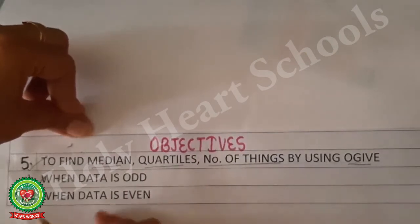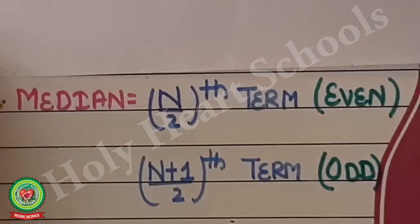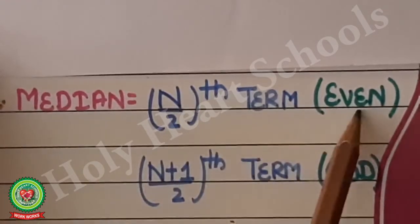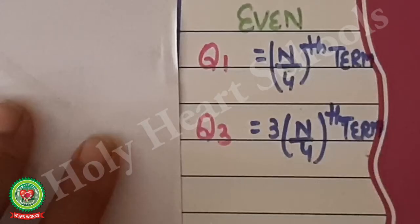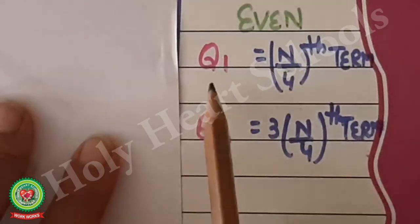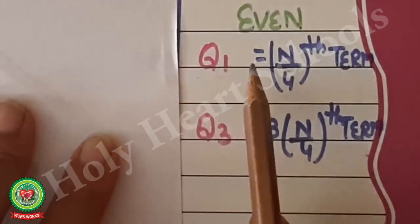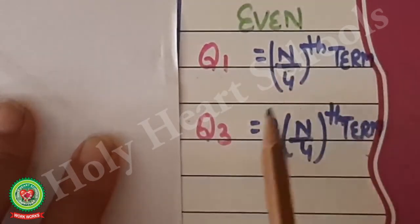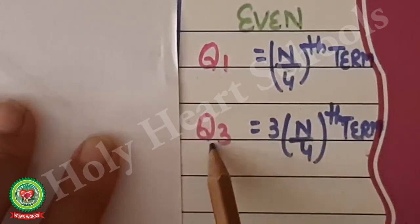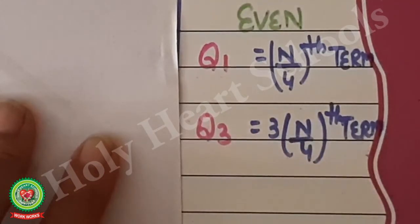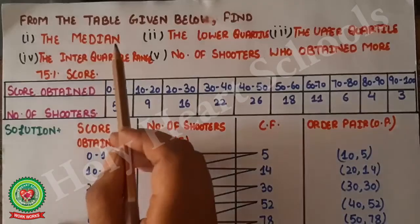When data is even, the formula to find median is the (n/2)th term. When n is even, the formula for lower quartile Q1 is the (n/4)th term, and upper quartile Q3 equals the (3n/4)th term. Now we will do one question related to these formulas.